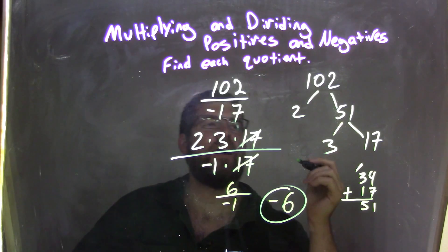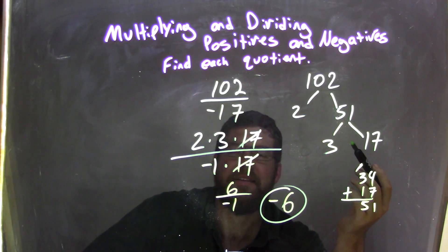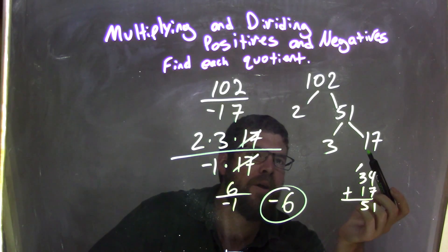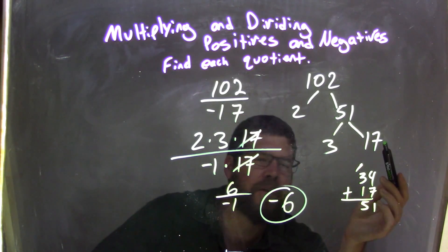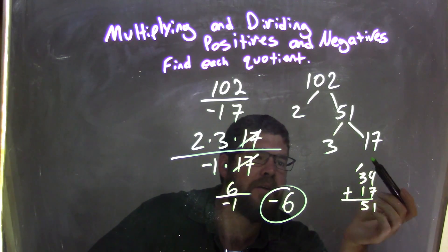Well, 2 goes into 102 51 times, right? So it's okay, 51, how can I break down 51? And I thought, well, 17 was in my denominator, so 17 must go in it. Well, 17 goes in it, so 3 times 17 equals 51.